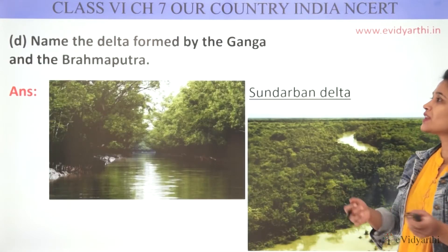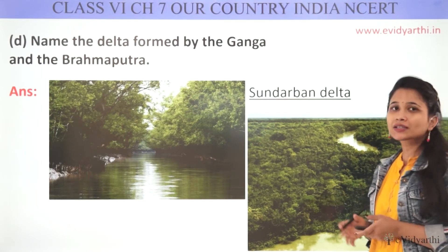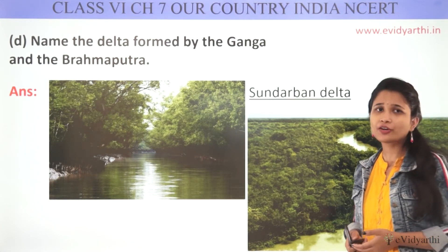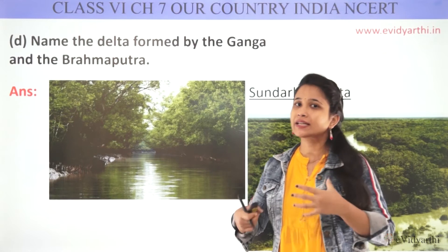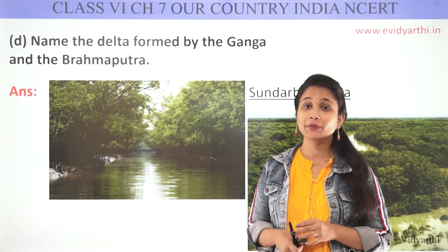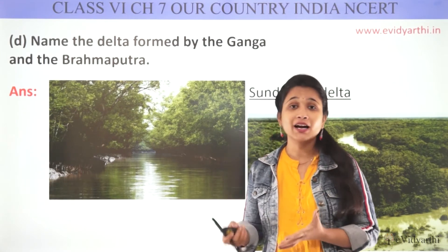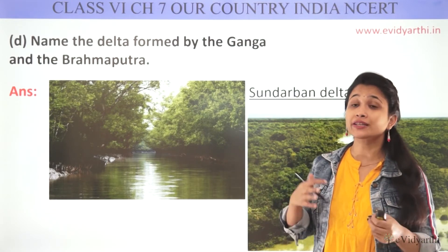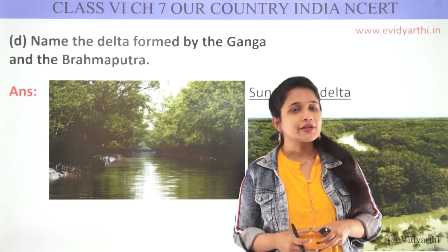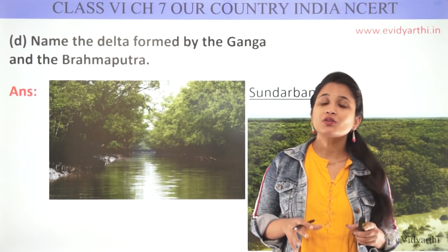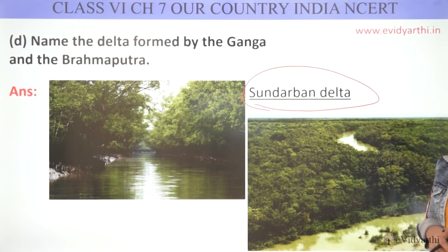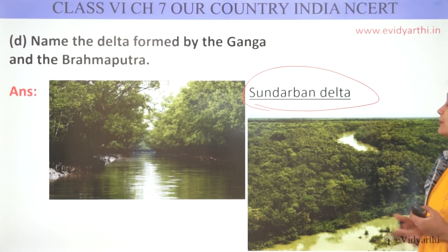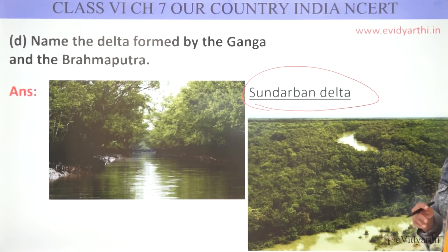Question D: name the delta formed by Ganga and Brahmaputra. When Ganga and Brahmaputra meet and fall into the Bay of Bengal, a delta is formed. This delta is formed because these rivers carry eroded materials which are very fertile. Where they drain into the Bay of Bengal, fertile land is formed. The name of this delta is the Sundarbans Delta.